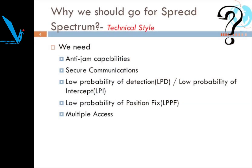The main requirements were secure communication and low probability of detection. On the warfront, the probability of detection had to be minimum. We need spread spectrum for anti-jamming capabilities, secure communication, low probability of detection or interception of the signal, low probability of position fix, and to enable multiple access techniques.